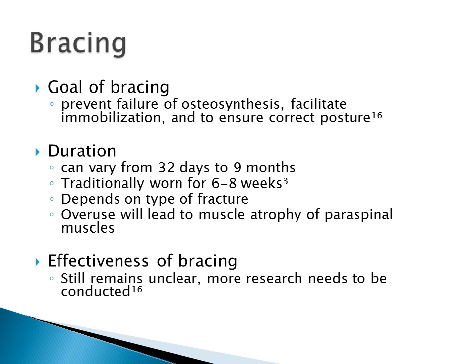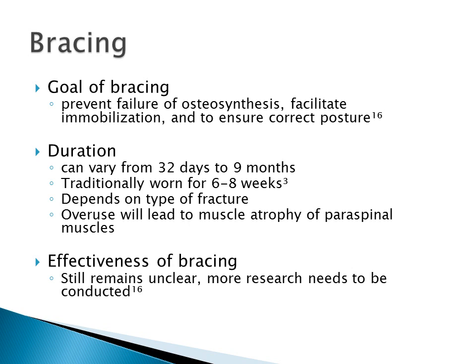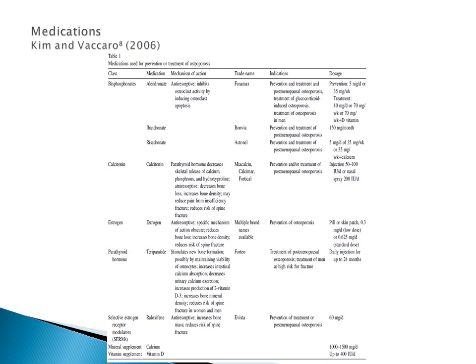Effectiveness of bracing still remains unclear, so more research needs to be conducted. Choice of drug treatment depends on the nature of the pain, the patient's age, as well as physical and mental health. Some medications include NSAIDs as well as centrally acting agents. Kim and Vaccaro provided examples of medications used for vertebral compression fractures in the osteoporotic population.